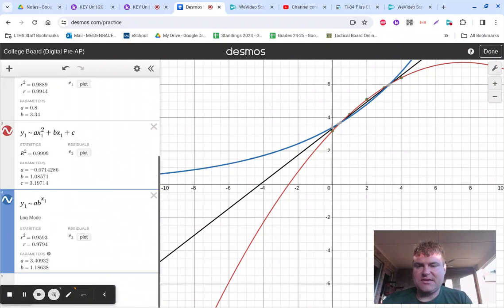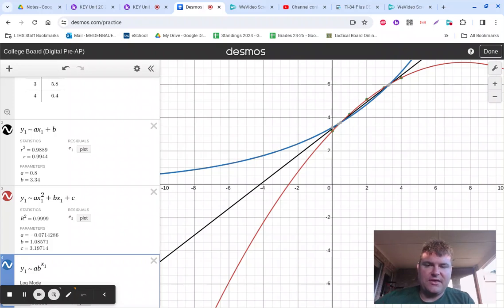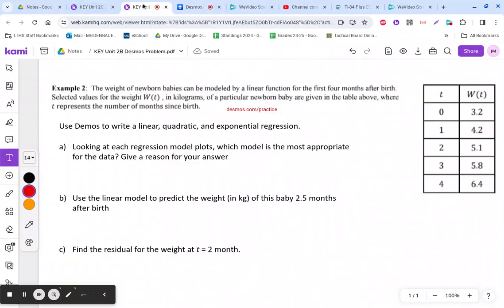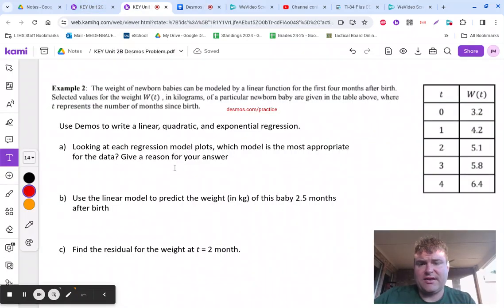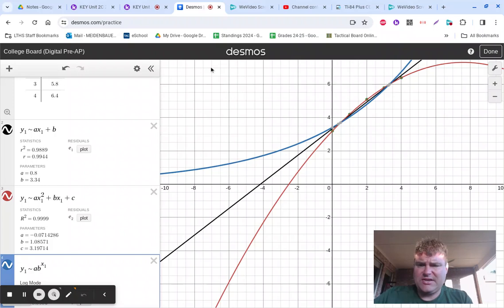So now, since I have these, I'm also going to graph the residual plots. That way I can see which one of these is best, and that's the way in AP Pre-Calculus that we use to evaluate. Coming back here, read question A: looking at each regression model plots, which model is most appropriate. It's going to be really tough on this one just to let you know because we've got five points because we're looking for where there's no pattern.